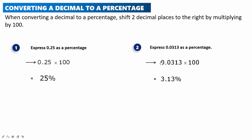Shifting the decimal point of 0.0313 twice to the right gives us 3.13 percent. That concludes this short topic on percentages, decimals, and fractions. Make sure you practice and remember how to convert from decimal to percentage, from percentage to fraction, and from fraction to percentage.